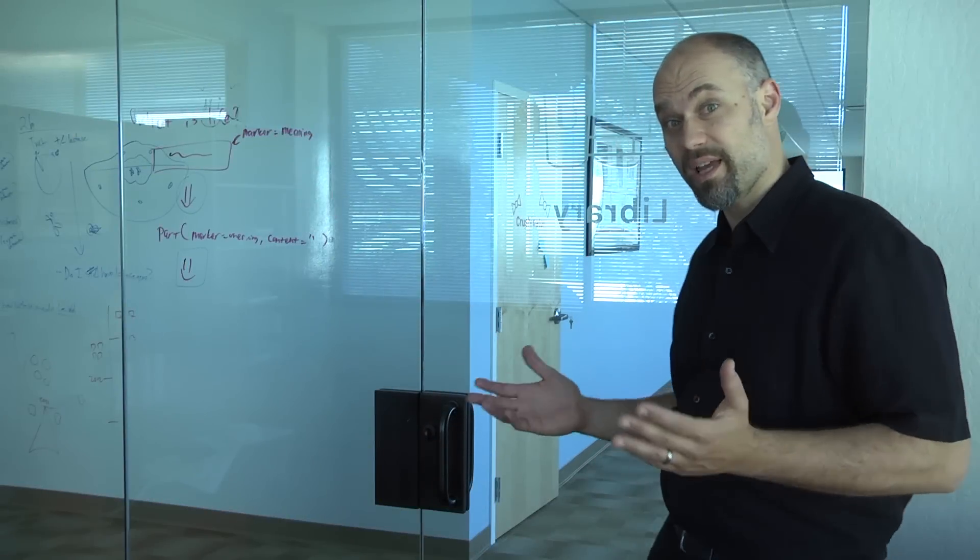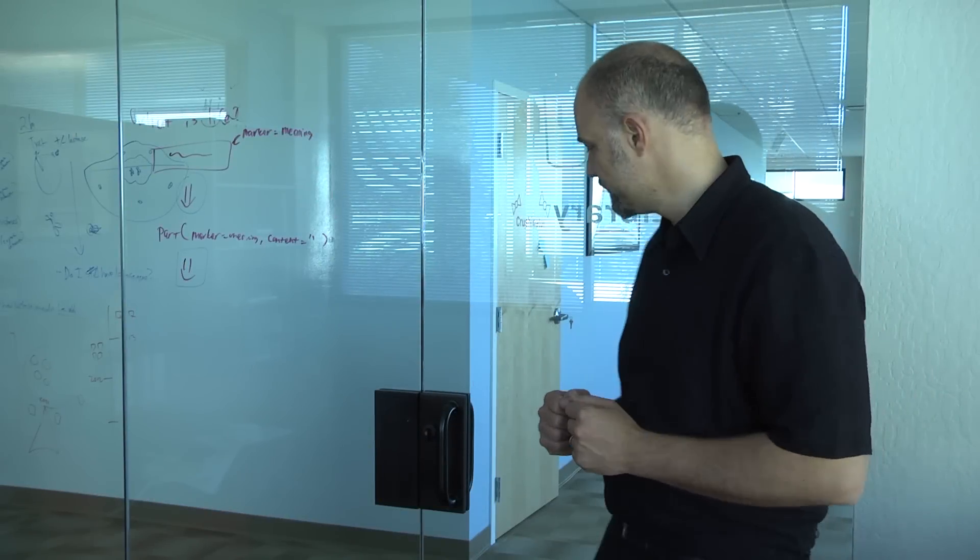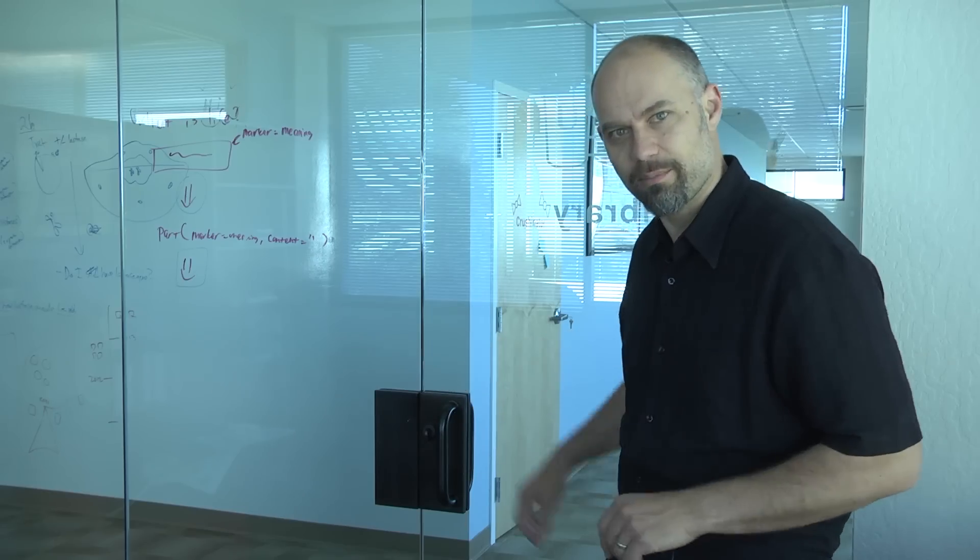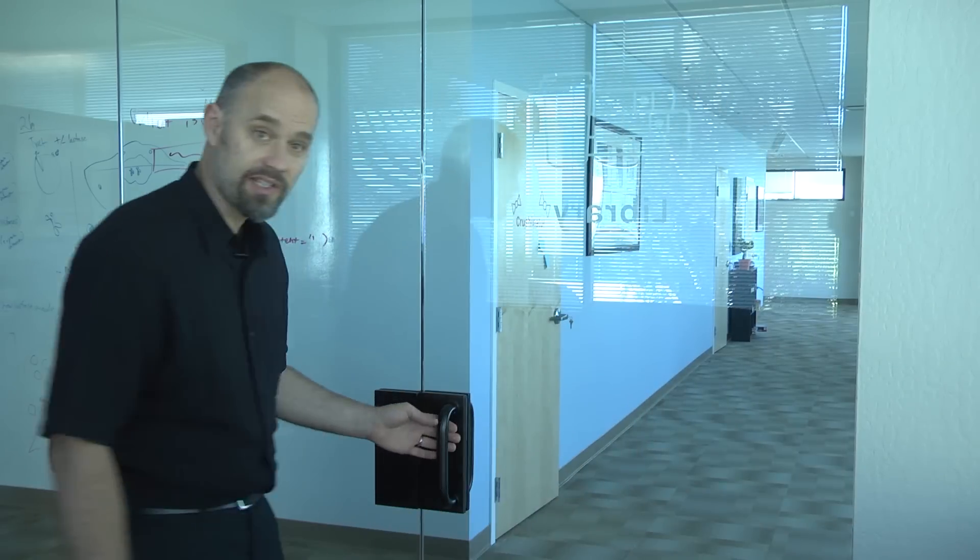Well, here we are in my example of a confusing signifier. It's this door plate thing. Well, actually, I'm not sure what to call it, because this is a door handle.